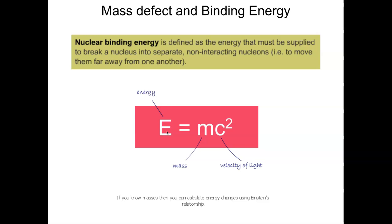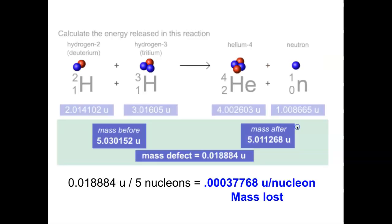The energy released in nuclear reactions — both artificial and natural — equals the missing bit of mass times the speed of light squared. A little bit of mass goes missing in these reactions, but when you multiply it by the speed of light squared — a huge number — you get a very significant amount of energy. This energy difference relates to the binding energy of the atoms involved.